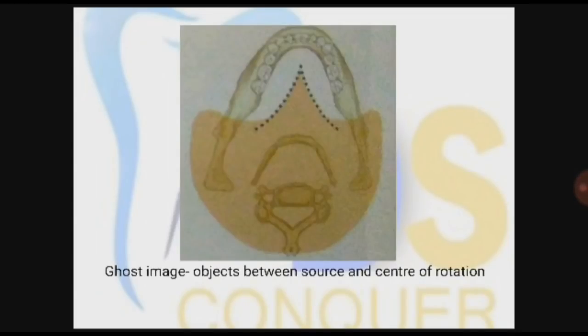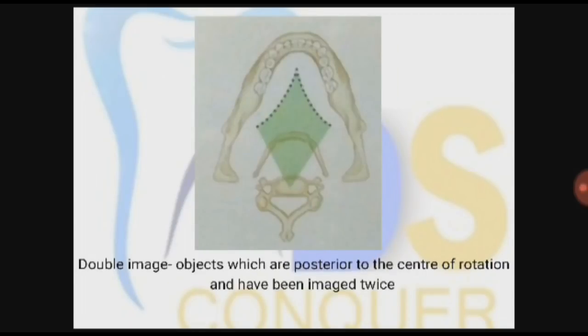The ghost image is formed of the objects which are between source and center of rotation. The source, that is the tube head, is never going to the endmost anterior part, so the anterior part is spared. The double image is formed of objects which are posterior to the center of rotation and have been imaged twice. It comes in this diamond-shaped area. Only these objects will be imaged double and are posterior to the center of rotation.